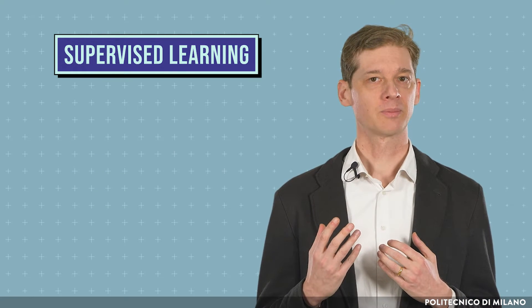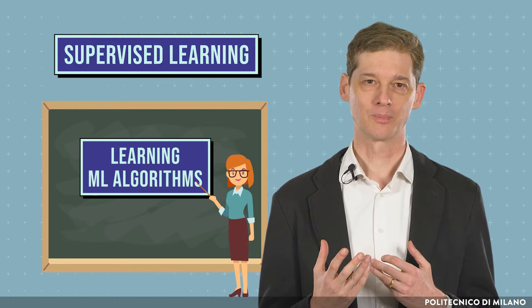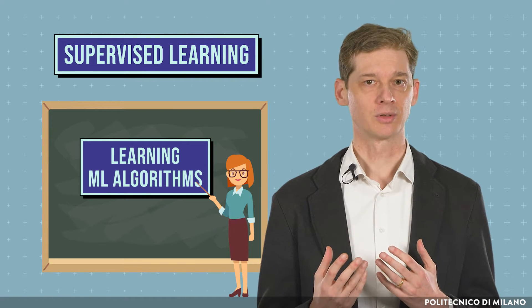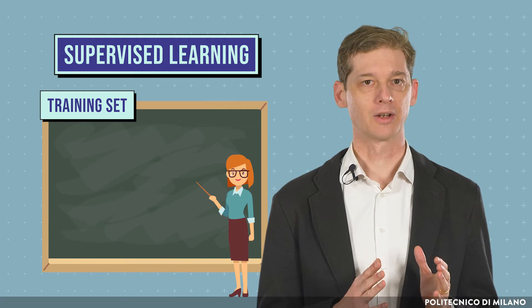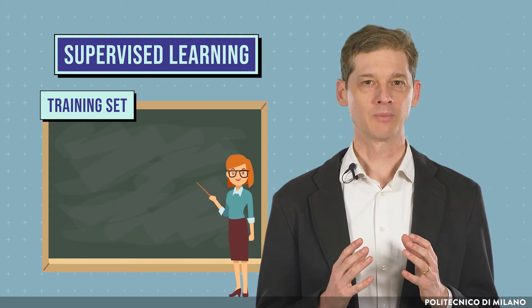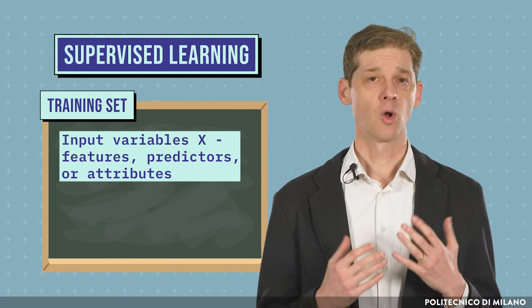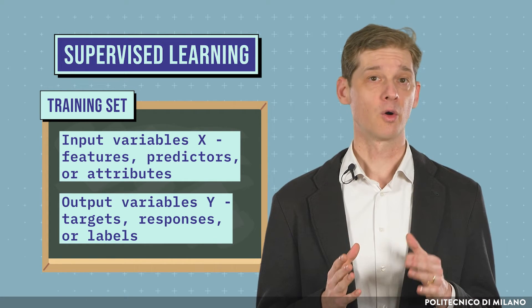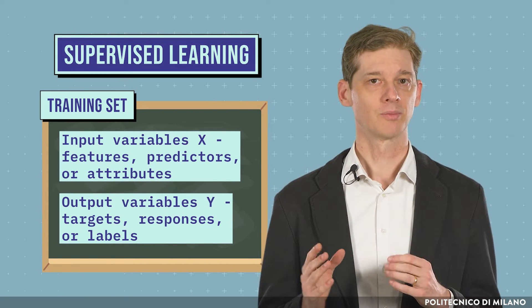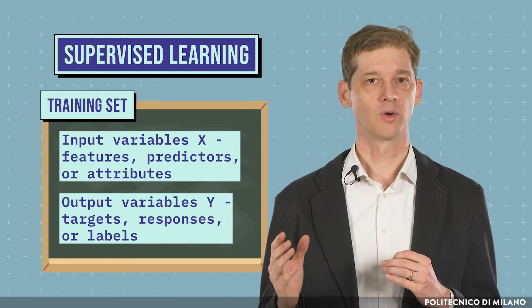As the name indicates, supervised learning involves machine learning algorithms that learn under the presence of a supervisor. The supervisor provides a set of examples, usually called a training set, to the machine learning algorithm. Each example is made up of a set of input variables, also called features, predictors or attributes, and one or more output variables, also called targets, responses or labels.